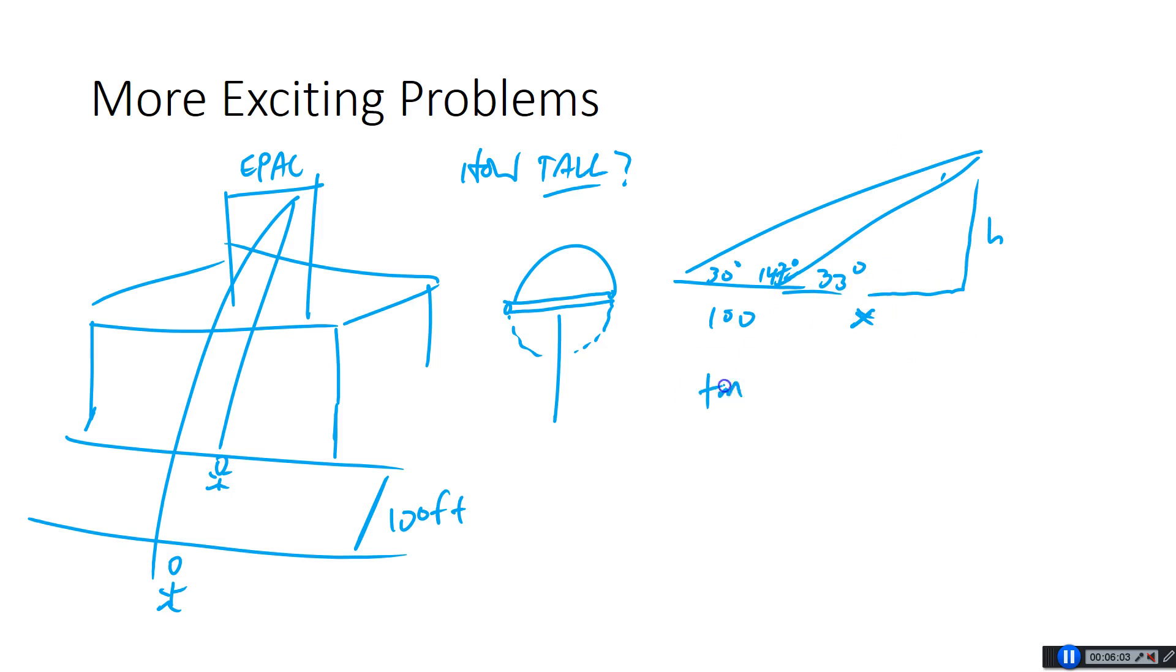So what I know is that, um, tan 33 is going to be equal to h over x, opposite over adjacent. Now this is the weird one, right? Because this is the right angle right here, right? How about tan of 30? What's tan 30 equal to? h over 100 plus x. Look at that. Now what we have is two equations with two variables. That's kind of your goal in all these problems. You get two equations with two variables and to never give up. Keep trying until you get two equations with two variables. Then you can solve for one and put it in terms of the other.